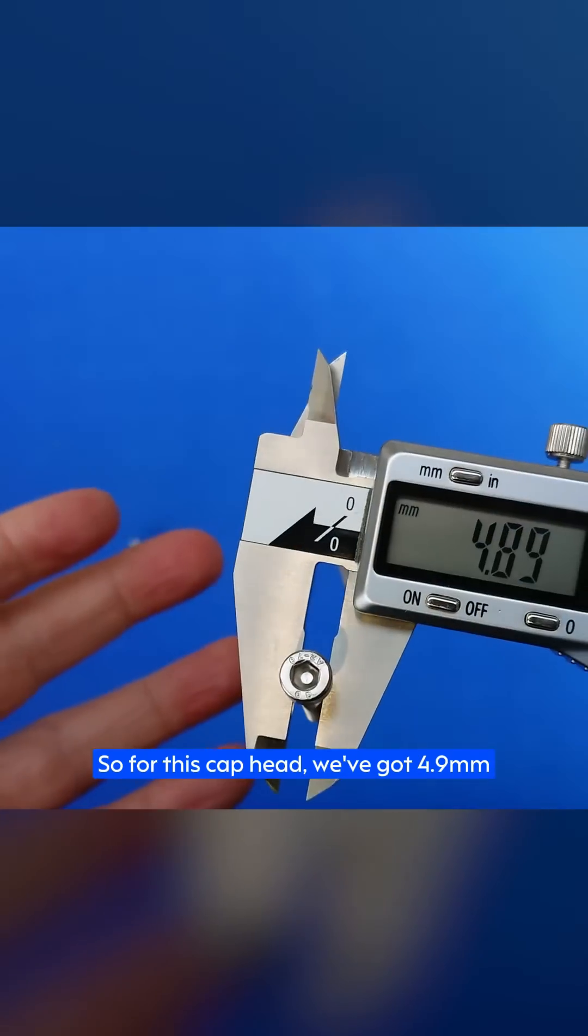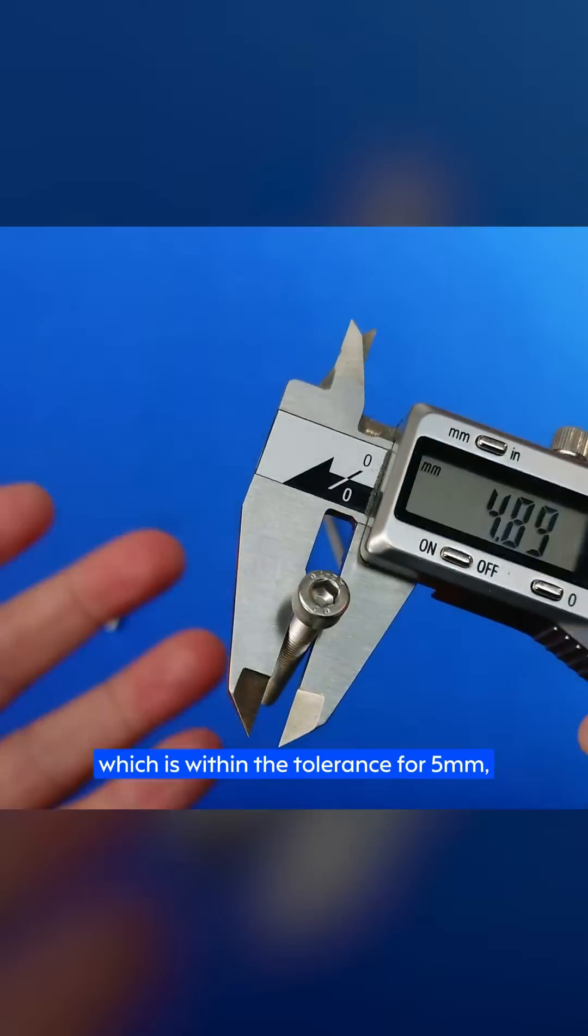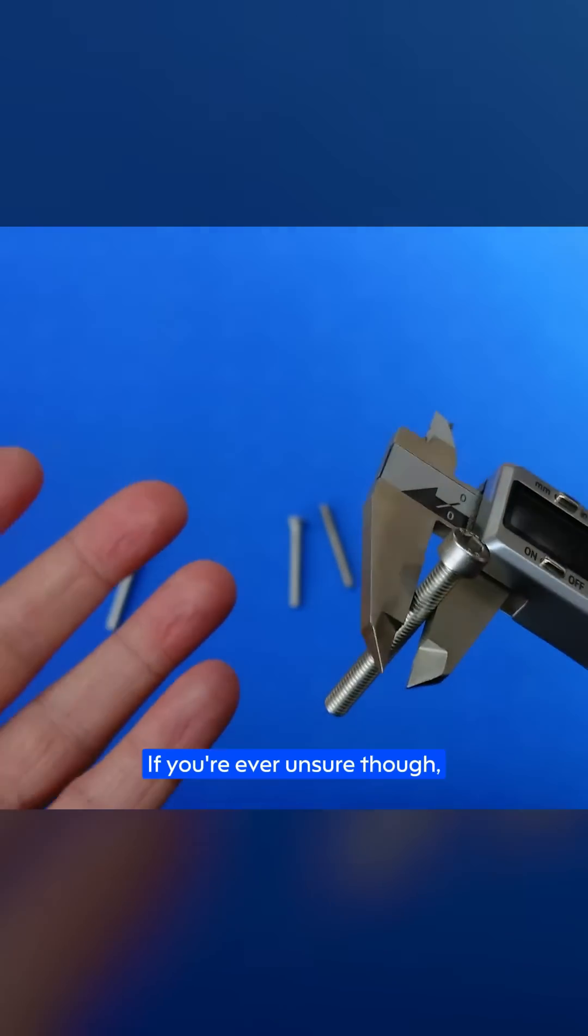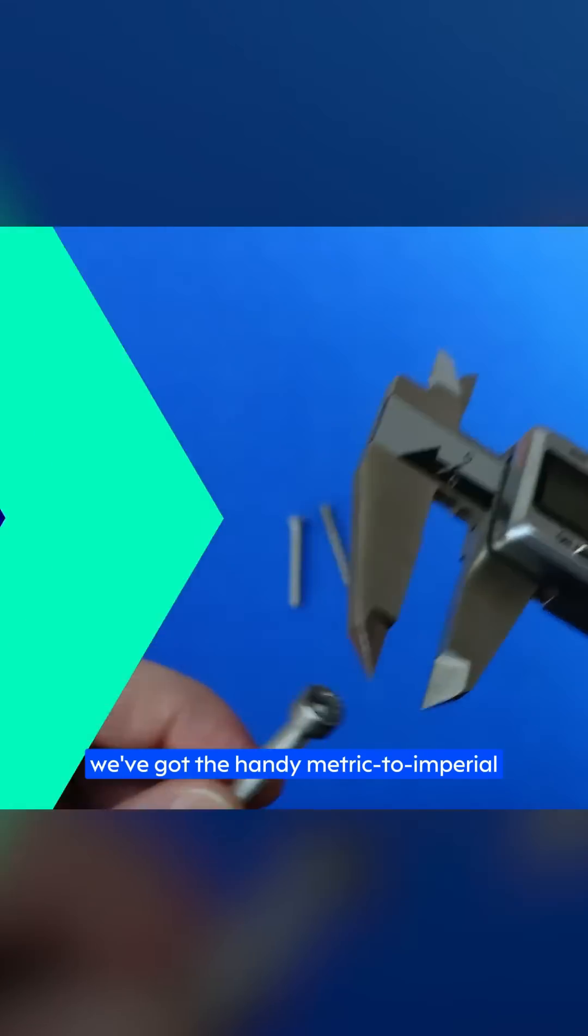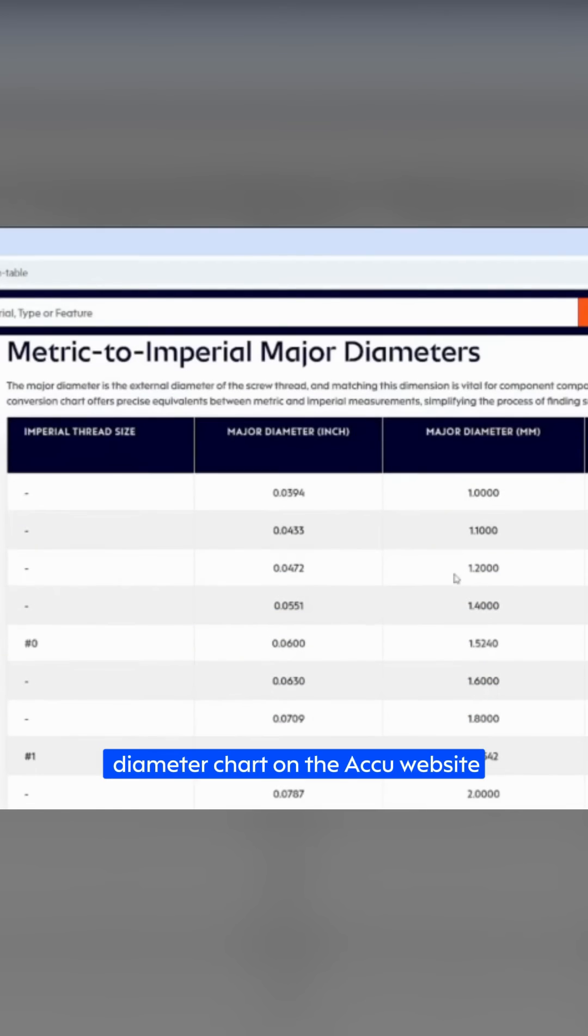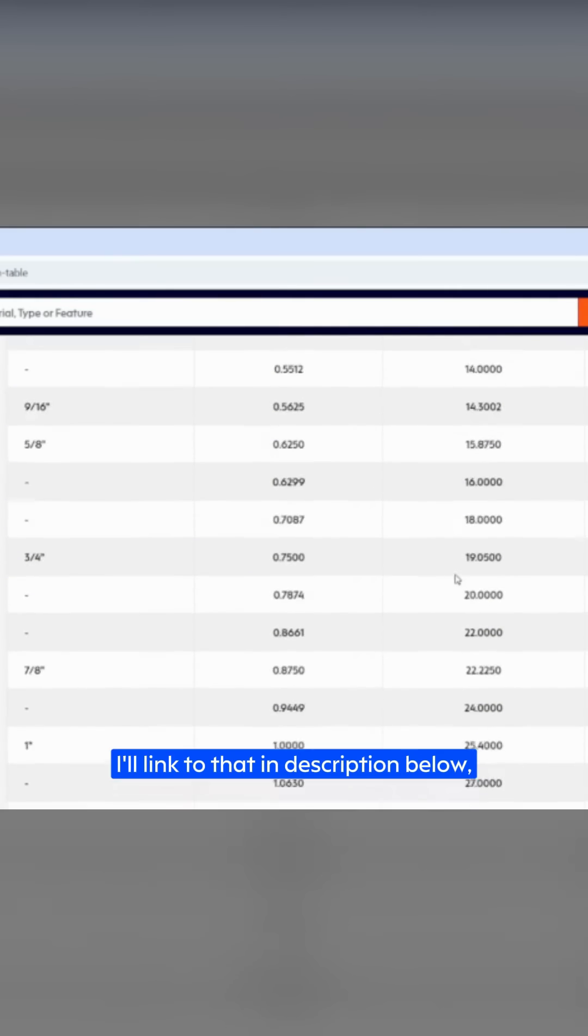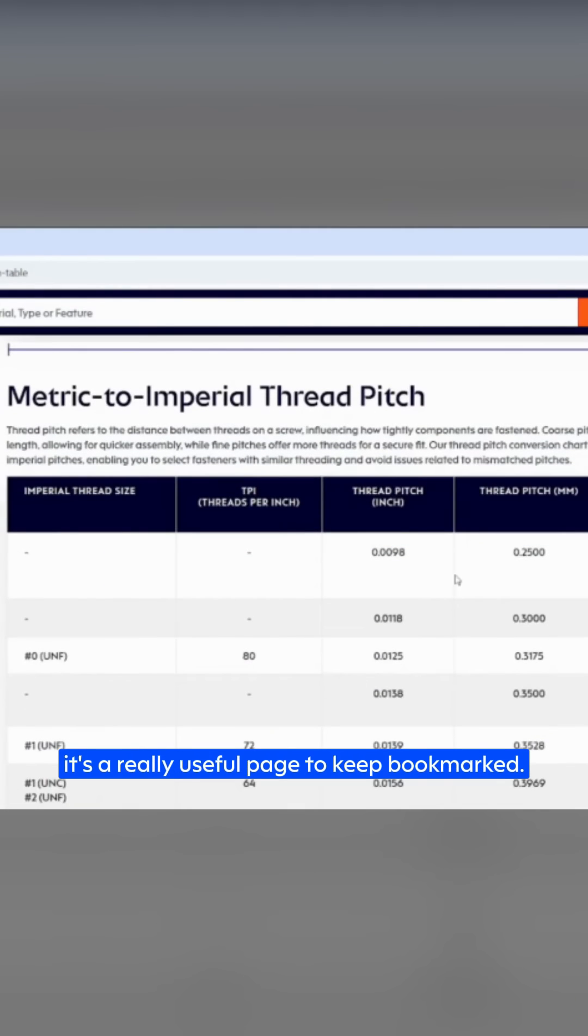So for this cap head, we've got 4.9 millimeters, which is within the tolerance for five millimeters. So we can safely say that it's an M5 screw. If you're ever unsure though, we've got a handy metric to imperial diameter chart on the ACCU website, which will help you find the closest standardized major diameter from your measurements. I'll link to that in the description below. It's a really useful page to keep bookmarked.